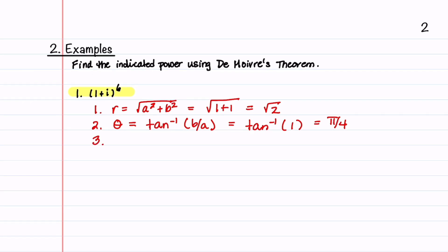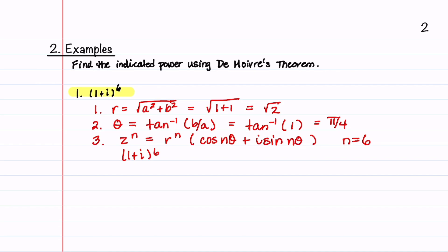Our third step is to apply the formula: z to the n equals r to the n times cosine of n theta plus i sine of n theta. For our problem, n equals 6. This gives us (1 plus i) to the 6th equals root 2 raised to the 6th, times cosine of 6 times pi over 4, plus i sine of 6 times pi over 4.